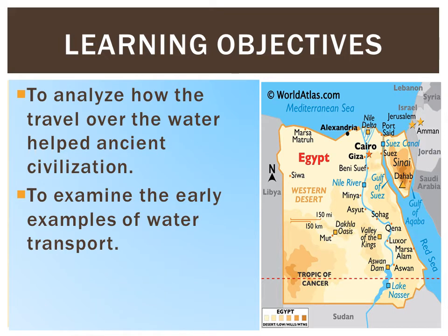These are the simple learning objectives: to analyze how travel over land helped ancient civilizations, and to examine the early examples of water transportation.